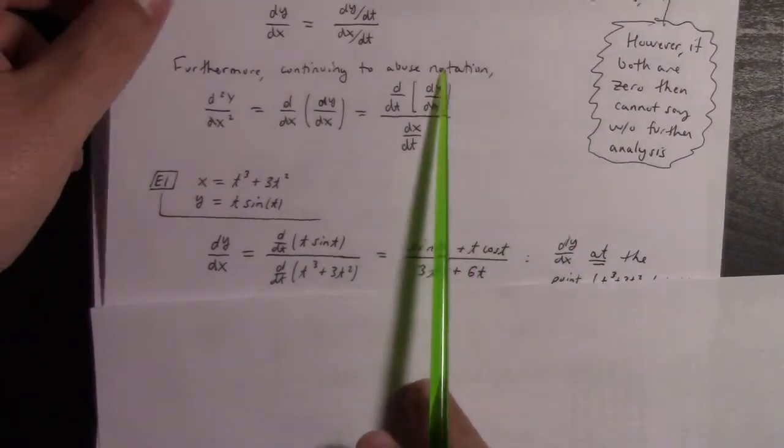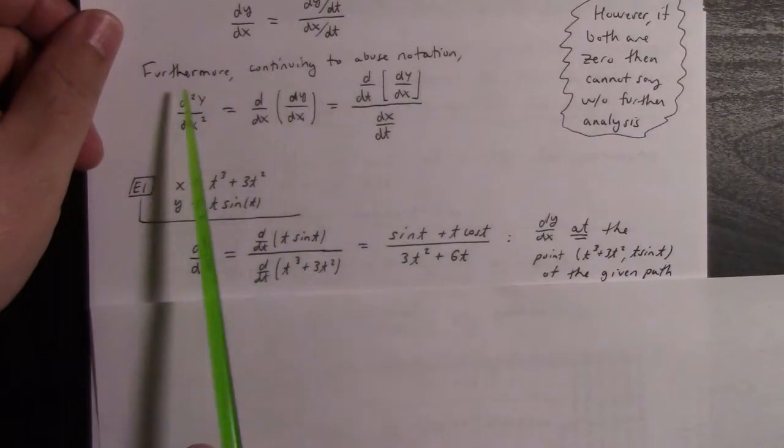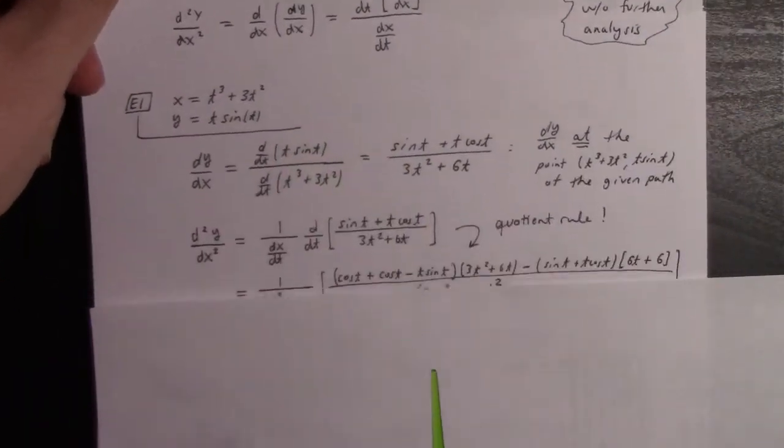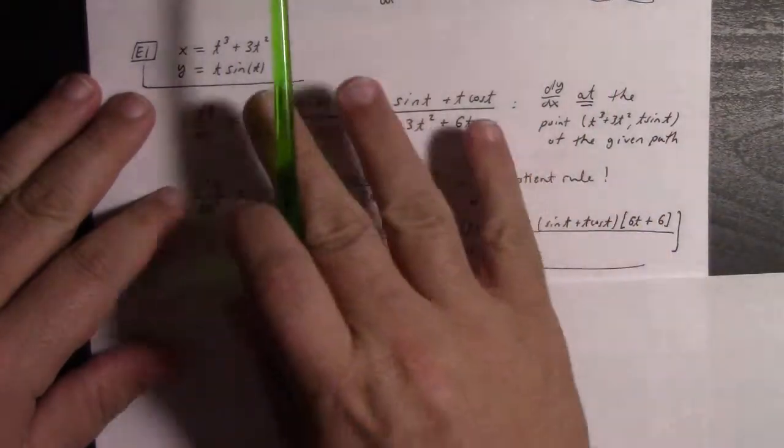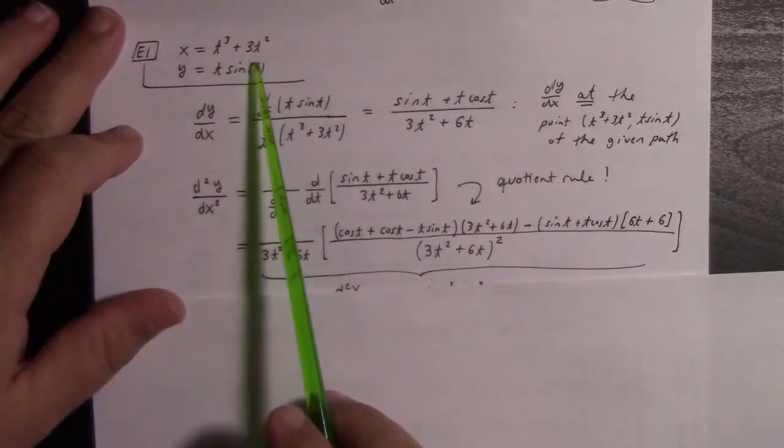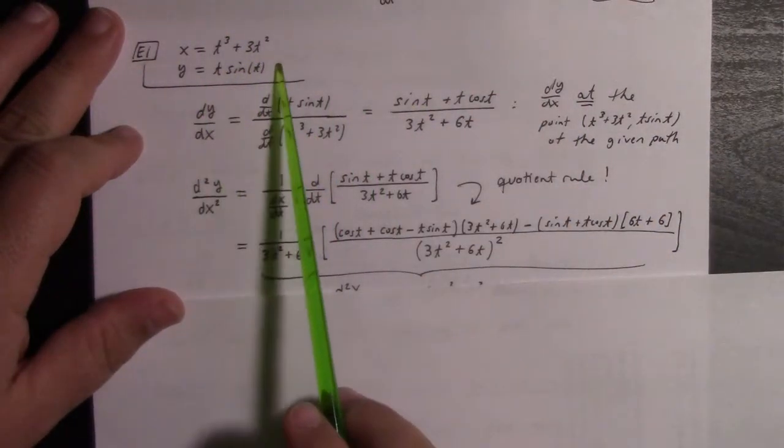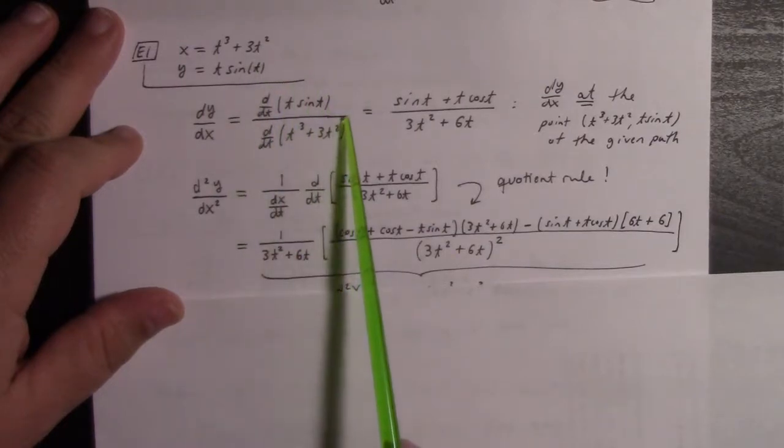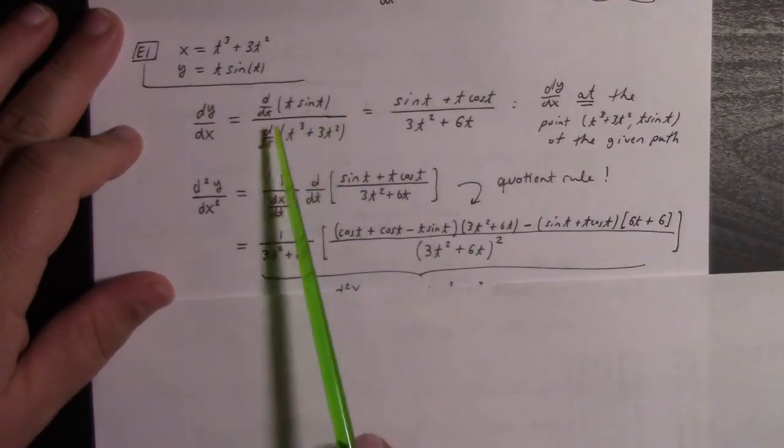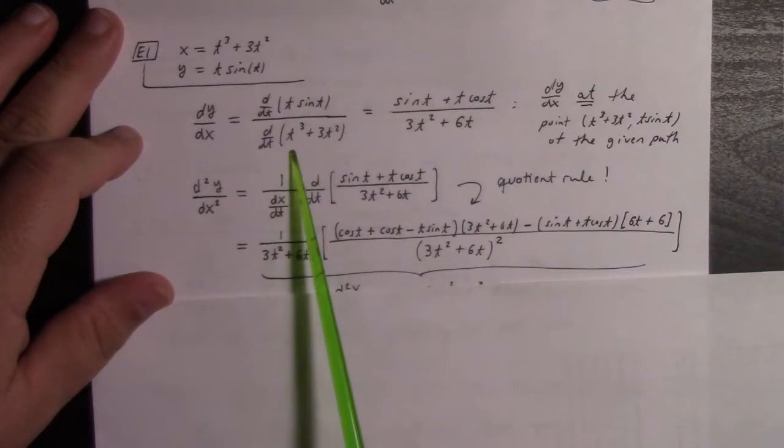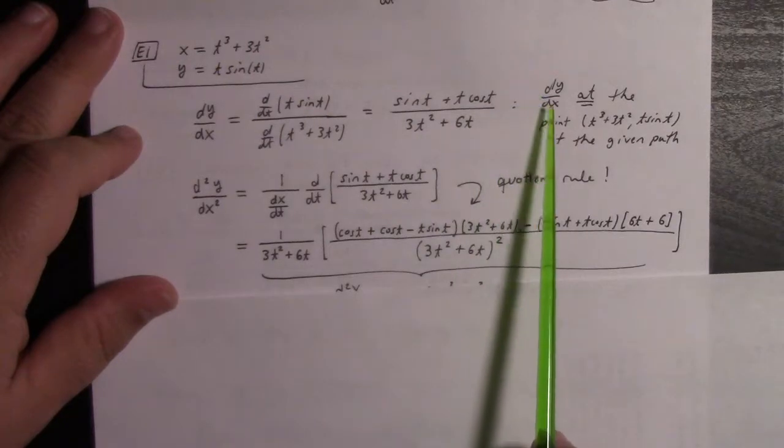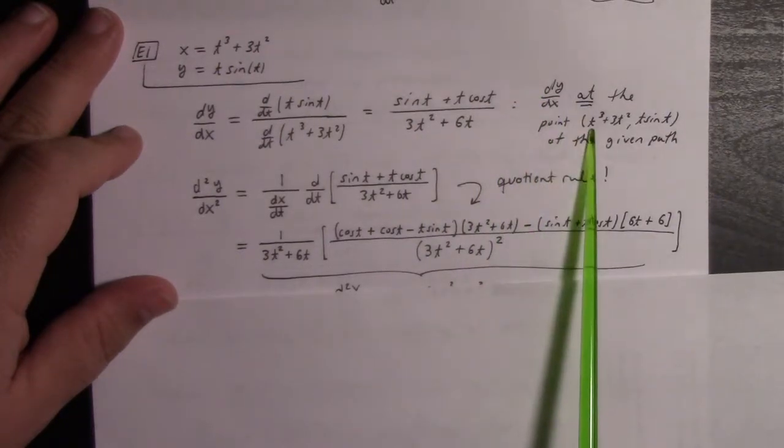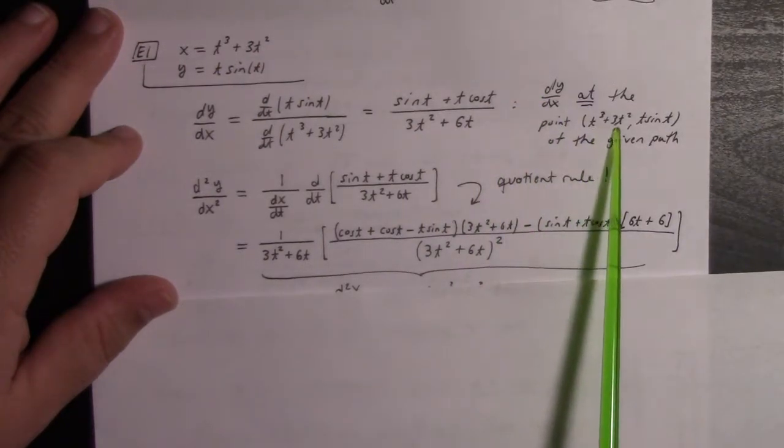It's very easy to get confused about what this really means. It's probably better illustrated by an example. Here we have x = t³ + 3t² and y = t sin(t) parametrizes a particular curve. Then dy/dx is dy/dt divided by dx/dt, and that is this.